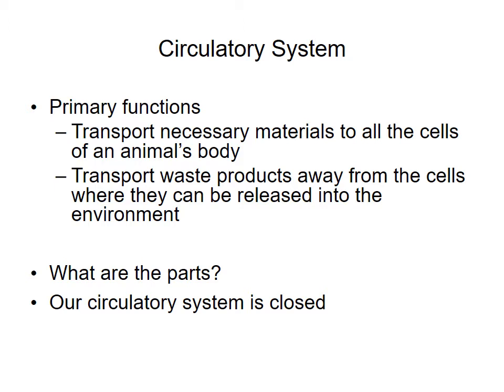The parts of your circulatory system are the heart and then three types of vessels: the arteries, the veins, and the capillaries. It's important to remember that our circulatory system is closed. Closed means that the blood and the interstitial fluid are physically separated from each other. The blood is actually in vessels in the body — it must flow within the vessels. Organisms with an open circulatory system have large sinus cavities that blood is pushed through, more of a sloshing around.